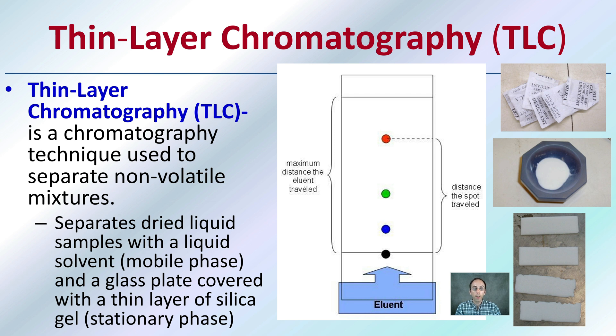It separates dried liquid samples with a liquid solvent as the mobile phase and a glass plate covered with a thin layer of silica gel as the stationary phase. We're getting a little bit more specific than paper chromatography, but again, still looking at non-volatile mixtures.